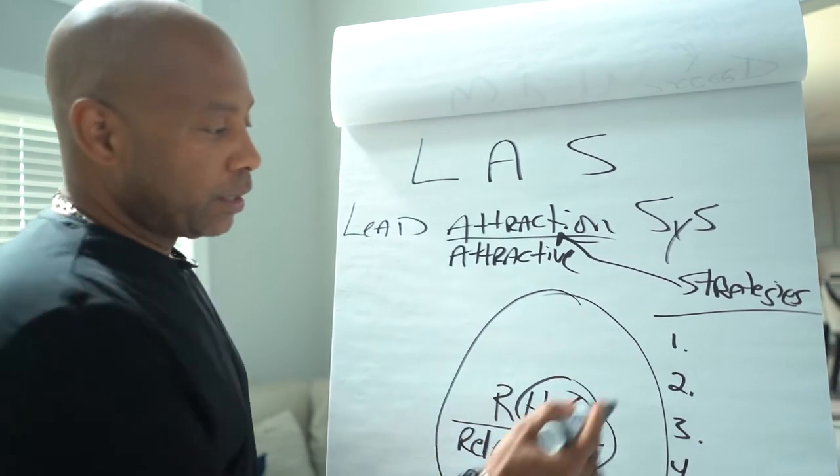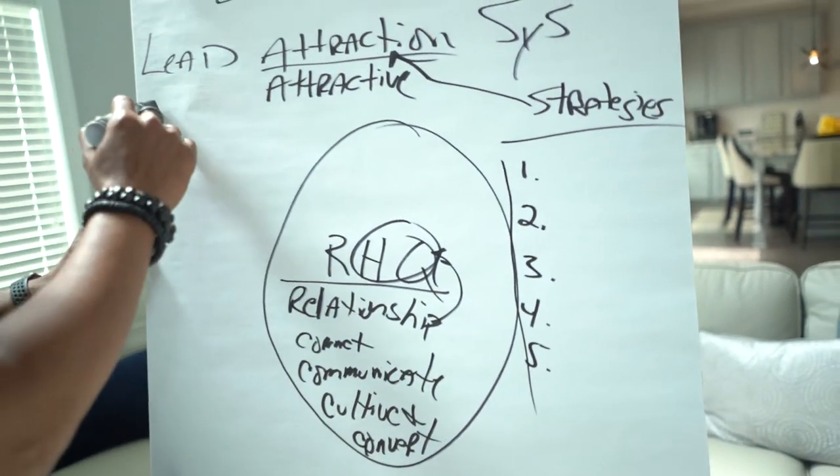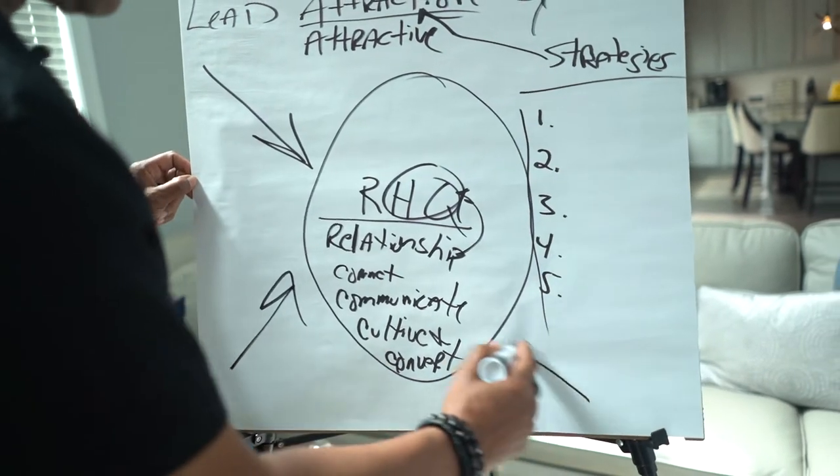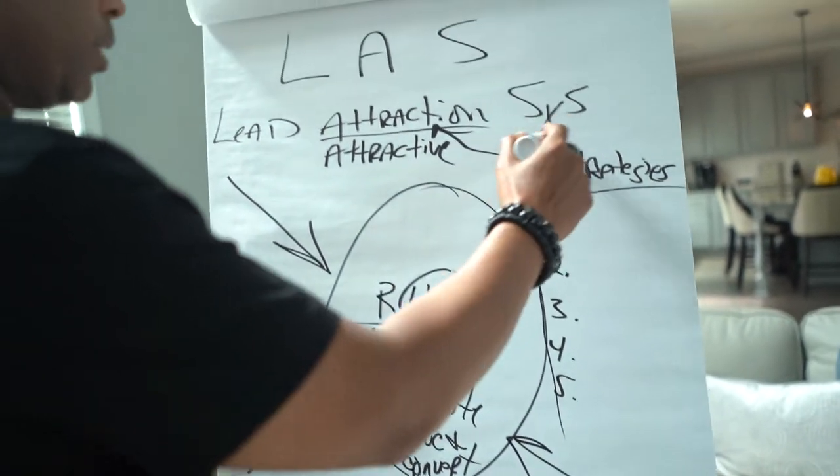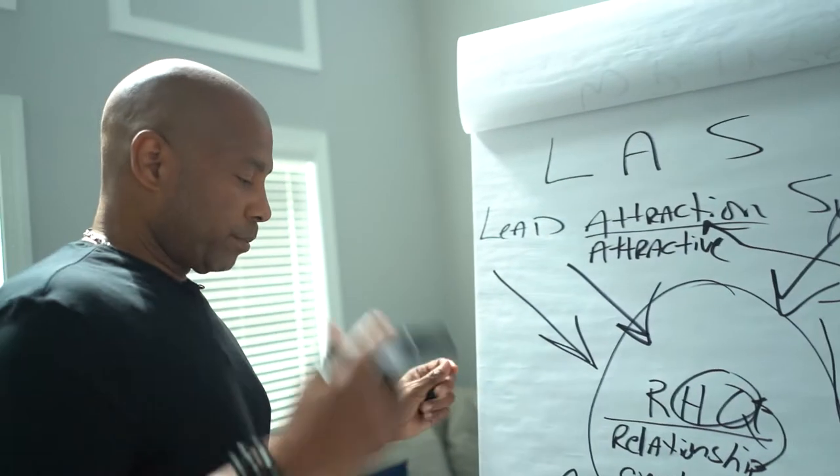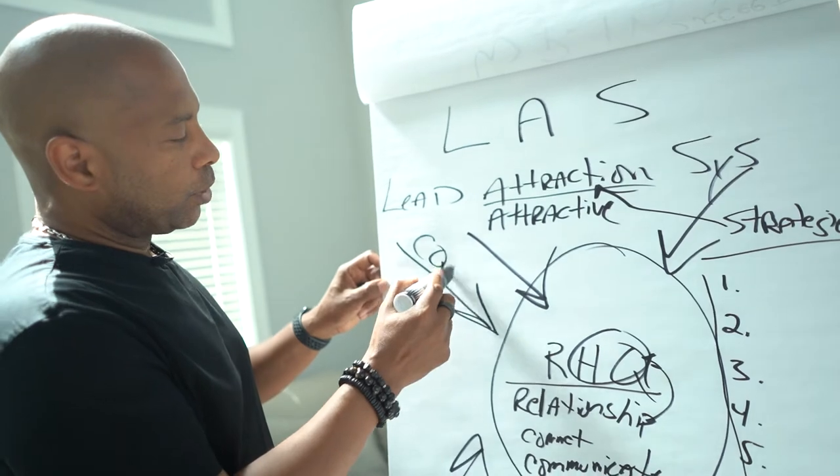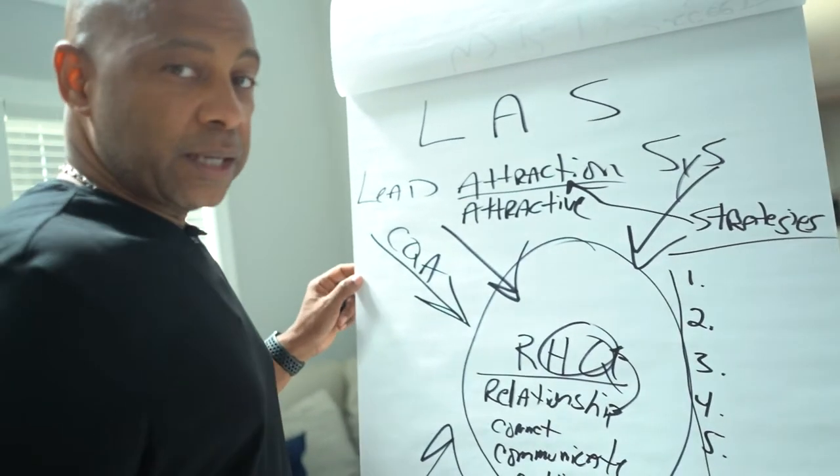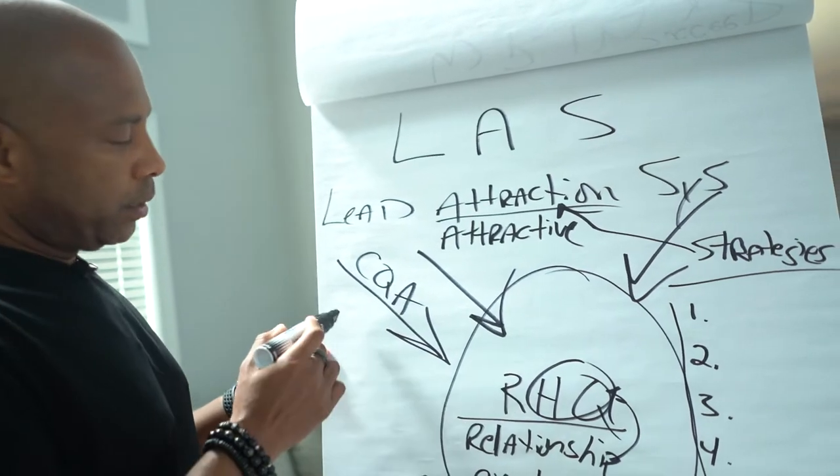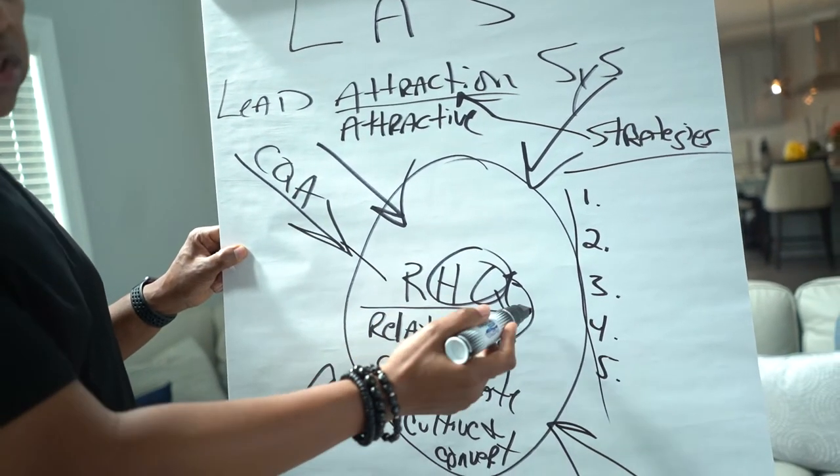So you're not doing one, then doing another one. These should be working together. So these arrows represent strategies all working together. So I'll give you an example. So we do coffee Q&A every Saturday at 8 a.m. When people register for the coffee Q&A, it brings them into our RHQ, relationship headquarters.